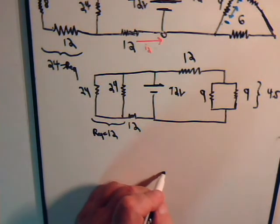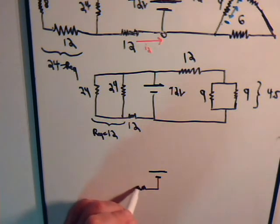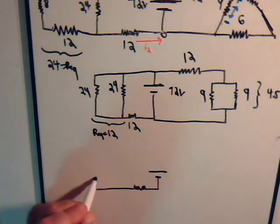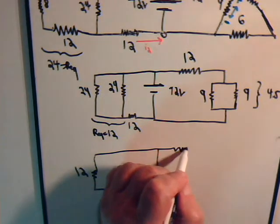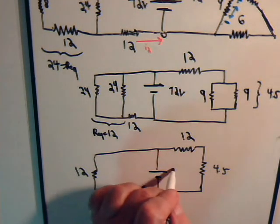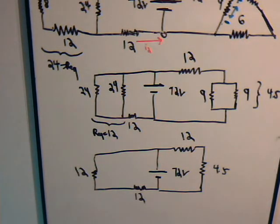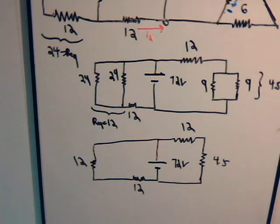Here's the battery — a battery of 72 volts. That is in series with a 4.5 ohm resistor. These two clearly are in series with each other, so we can replace that with a 24 ohm resistor. These are in series; we can replace that with a 16.5 ohm resistor.